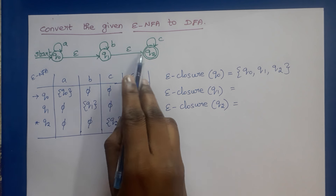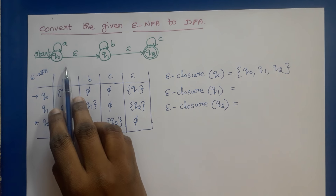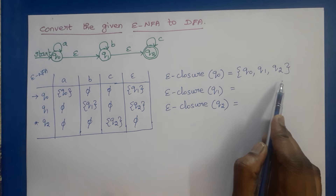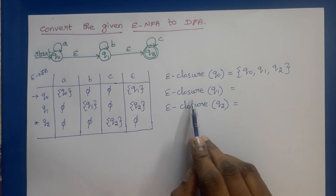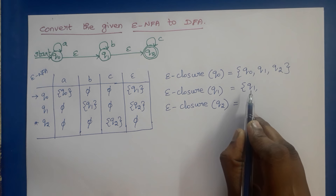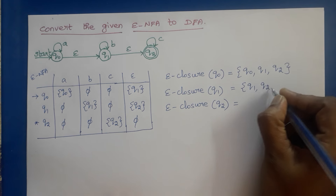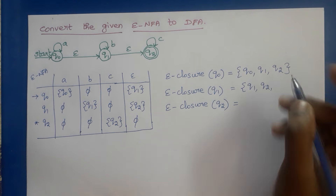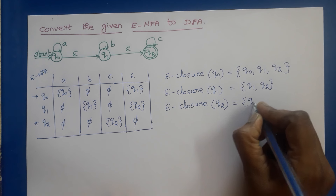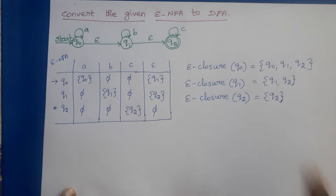From Q0, by following epsilon transitions we can reach other states. Epsilon closure includes the set of states reachable from Q0 by following only epsilon transitions. Similarly, epsilon closure of Q1 contains Q1 first. Then from Q1 there is an epsilon transition going to Q2, so we include Q2. From Q2 there is no epsilon transition. Epsilon closure of Q2 just contains Q2, since there are no epsilon transitions from Q2.